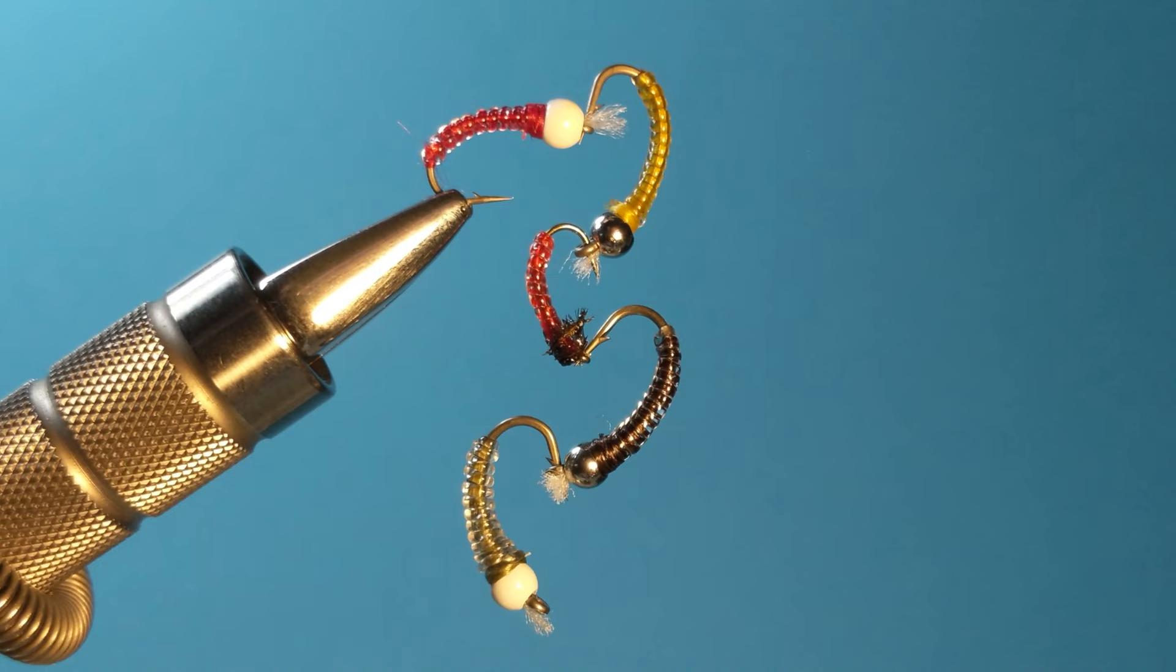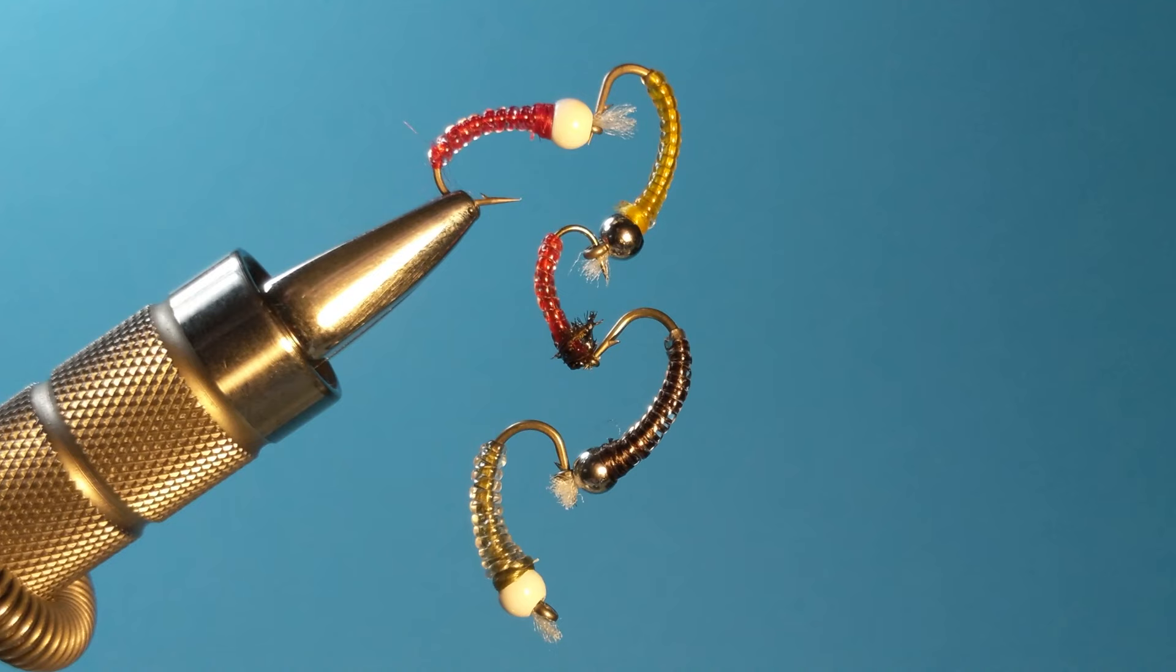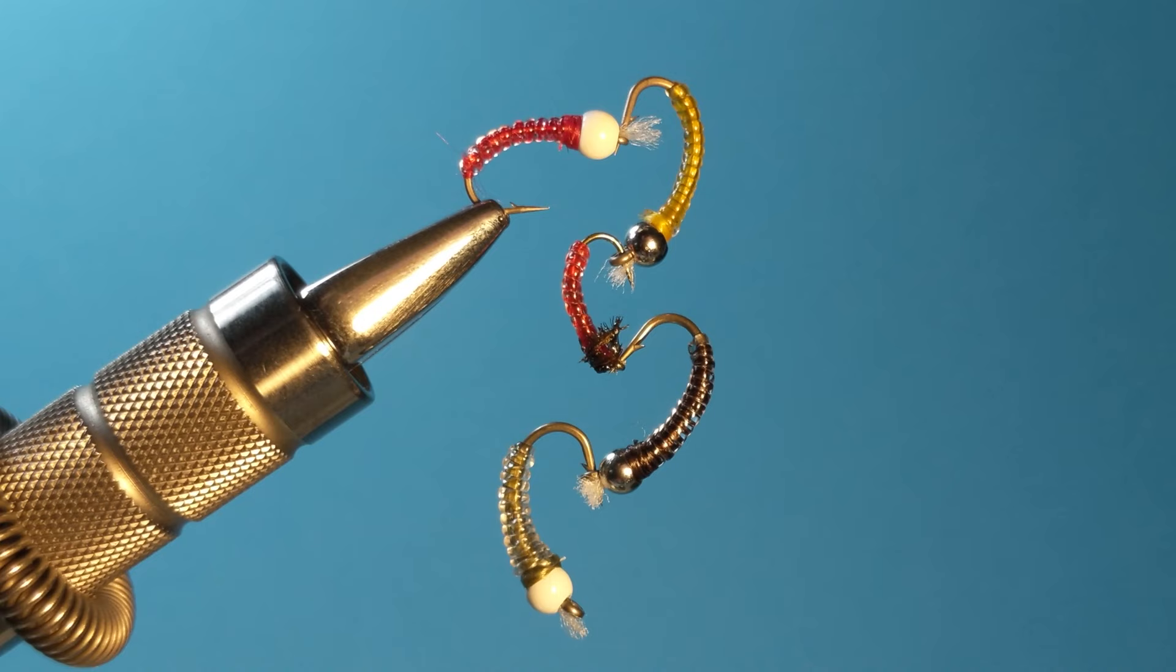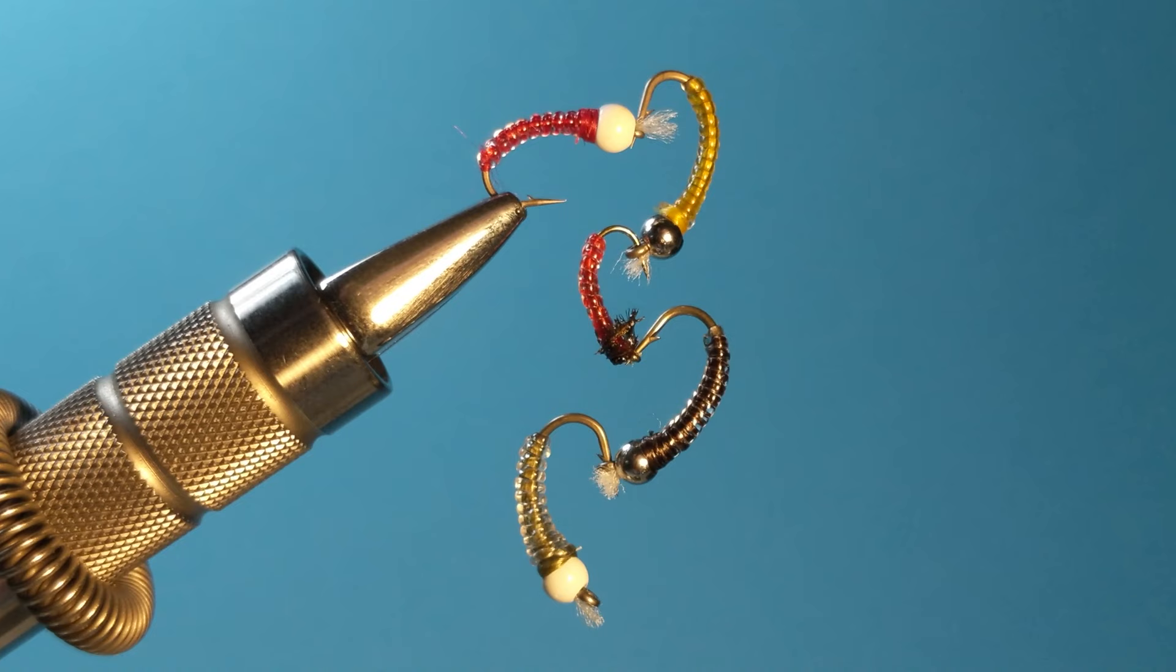White bead heads and silver bead heads are kind of the most typical. But you can kind of explore and have fun with it. Anyway, guys, that's how you tie the vinyl rib bead headed chironomid. Again, these are very versatile, very fun to tie, very simple, and very few materials. So it's a great fly to learn on. It's what I've been doing.